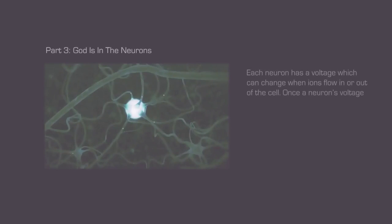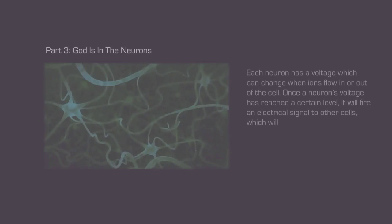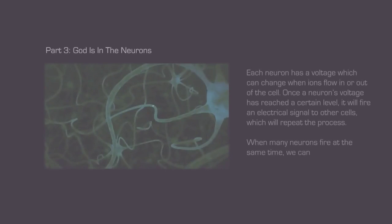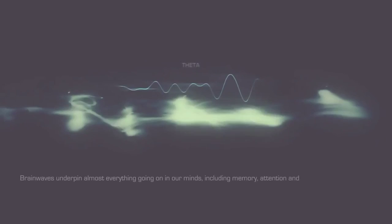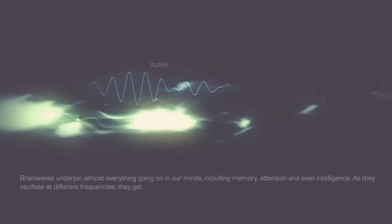Each neuron has a voltage, which can change when ions flow in or out of the cell. Once a neuron's voltage has reached a certain level, it will fire an electrical signal to other neurons, which will repeat the process. When many neurons fire at the same time, we can measure these changes in the form of a wave. Brainwaves underpin almost everything going on in our minds, including memory, attention and even intelligence. As they oscillate at different frequencies, they get classified in bands such as alpha, theta and gamma. Each are associated with different tasks.